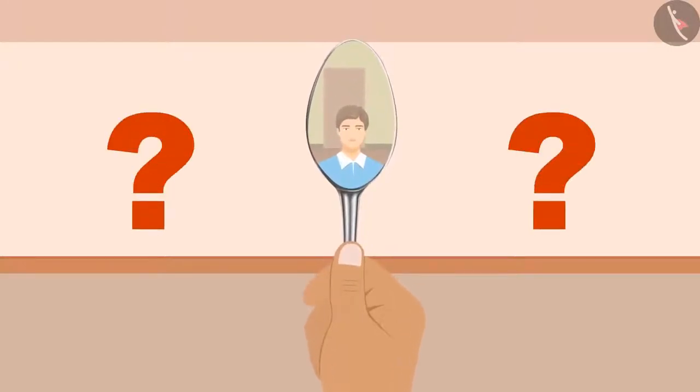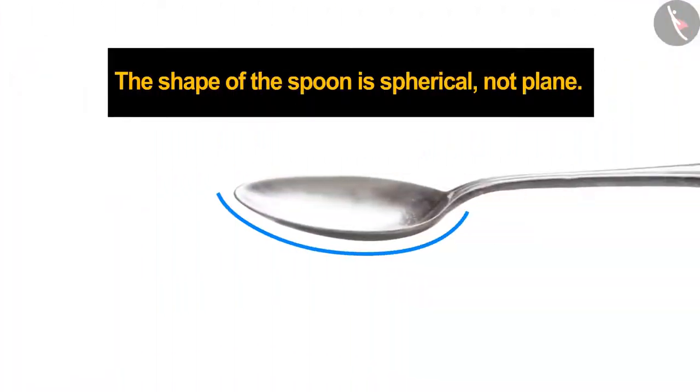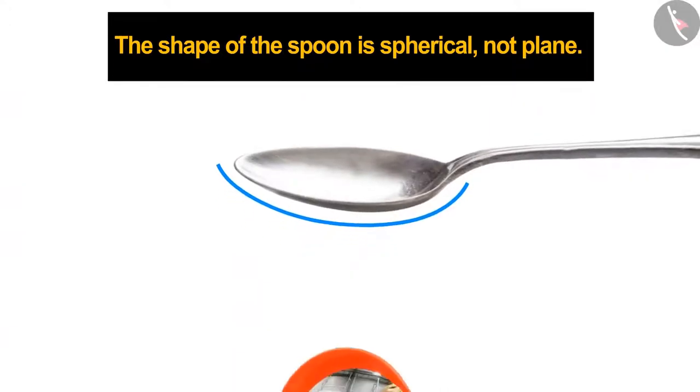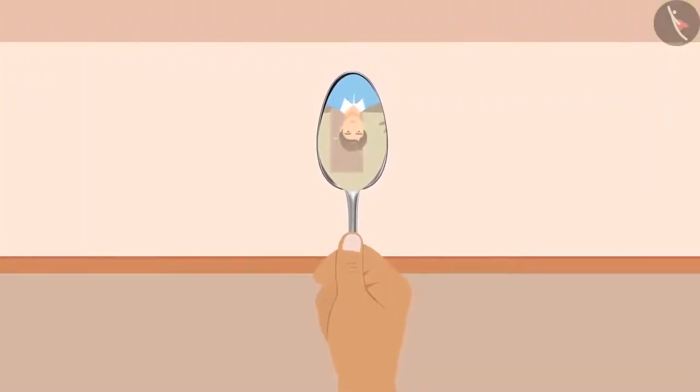Could you think why this would have happened to Rahul? The shape of the spoon is spherical, not plain. Those mirrors which have spherical reflecting surfaces like the spoon, in this case, are called spherical mirrors. The small and inverted appearance of the image are two of the characteristics of the image formed by spherical mirrors.